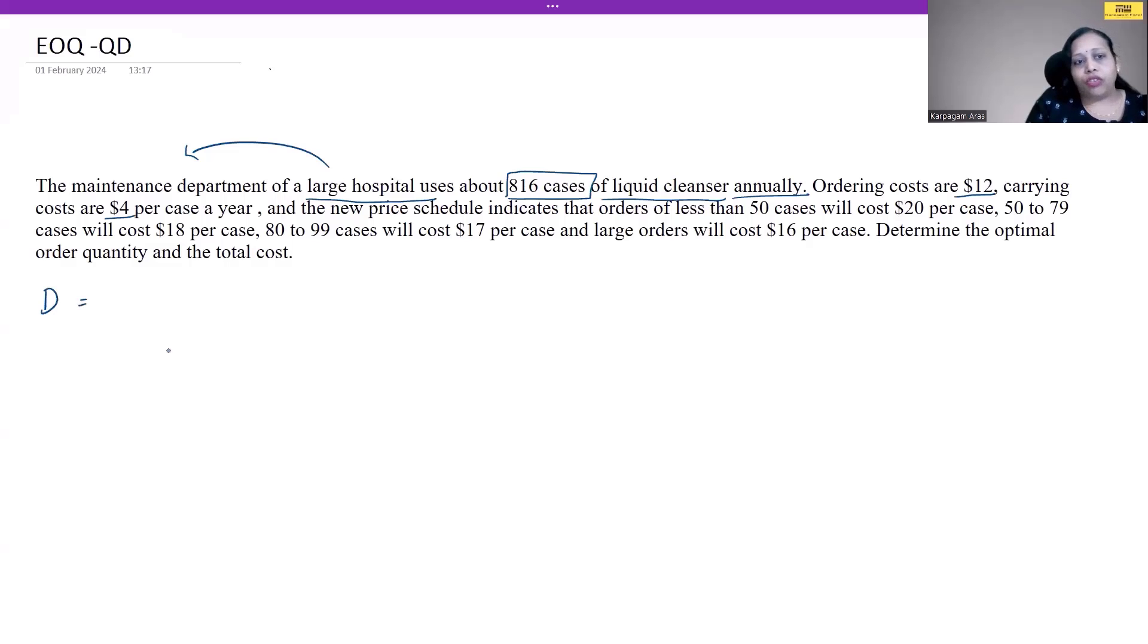First, let's take the demand: D = 816 cases. Then we have the ordering cost, also known as the setup cost, denoted as S. You can use CO for ordering cost or any other notation. In this case, it's $12. For holding cost, I'm using H, or you can use CC for carrying cost, which is $4 per dollar. This is the base information given.